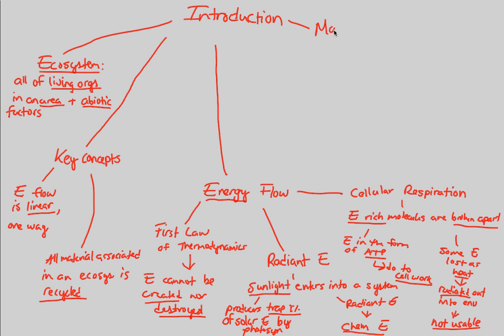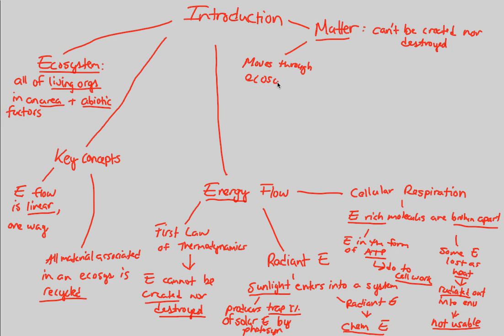The last concept in this introduction to ecosystem ecology is the idea of matter. Matter can't be created nor destroyed — this is the law of conservation of mass. This is critical because matter itself moves through the ecosystem in many different forms and ways, simply being converted rather than created or destroyed. Those conversions are mainly looked at through the biogeochemical cycles that we observe in an ecosystem.